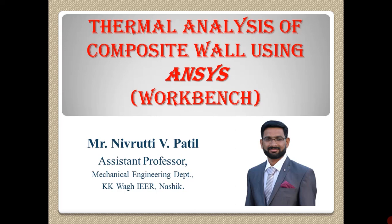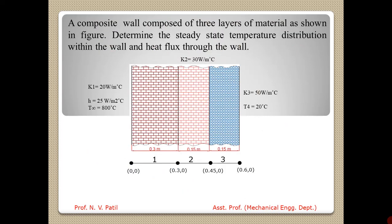Hello friends and welcome to this video tutorial. In this tutorial we are going to do the thermal analysis of a composite wall using ANSYS Workbench. The composite wall is composed of three different layers of material having different thermal conductivity. One end has a temperature of 20 degree Celsius, and the other end has a temperature of 800 degree Celsius with a convection coefficient of 25 Watt per meter square per degree Celsius. We are going to analyze the steady state temperature distribution.